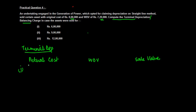If we see case one, the actual cost was 8 lakh, written down value is 7 lakh 20,000, the value for which it is sold is 6 lakh. Now in these cases, first thing which you need to see is you need to compare the written down value with the sale value.